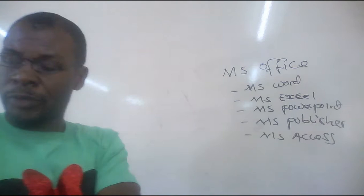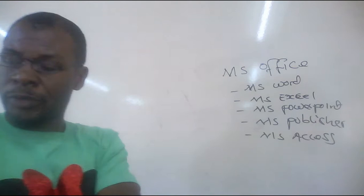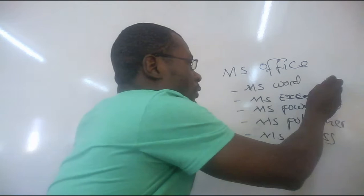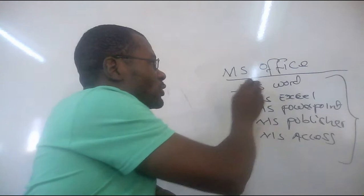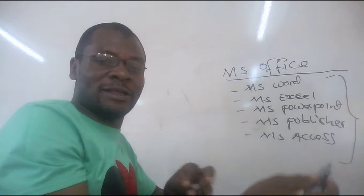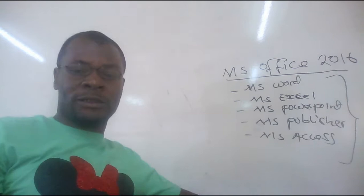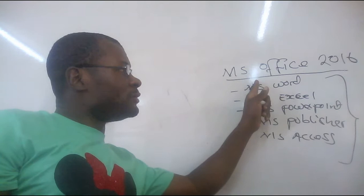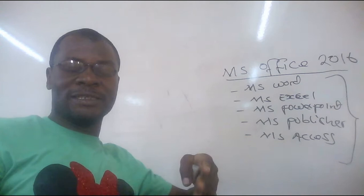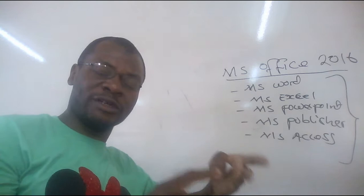There are others of course, but these are the most common types of software that we use on a computer, and all these are loaded in what we call Microsoft Office. Microsoft Office can be Office 2010, Office 2013, Office 2016. I know Office 2019 is out, but I haven't used it. I will be experimenting with you using Office 2016. Microsoft Office is known as an integrated software, because it has got more than one application in it.